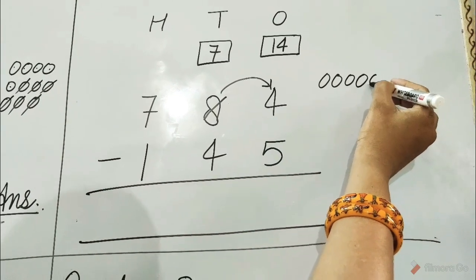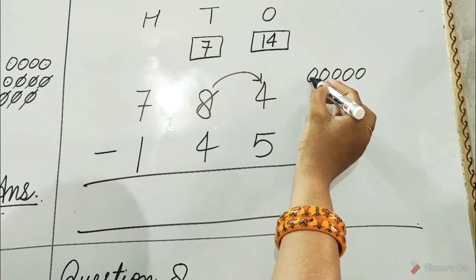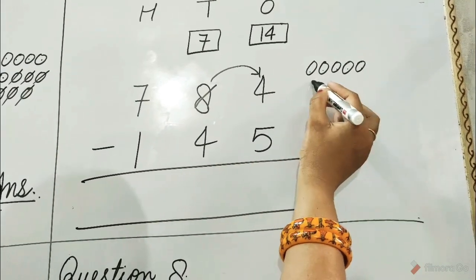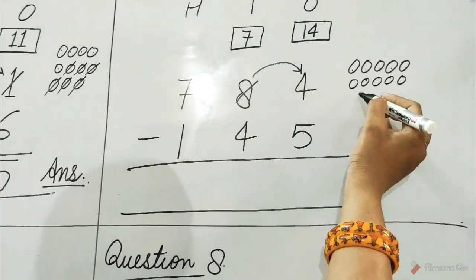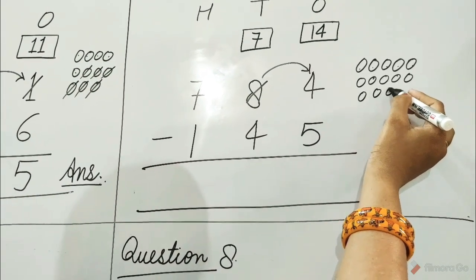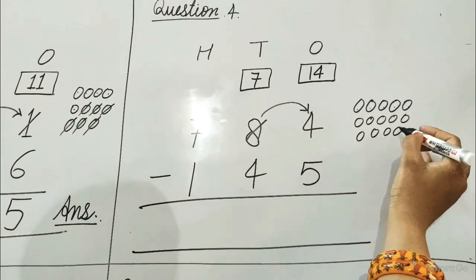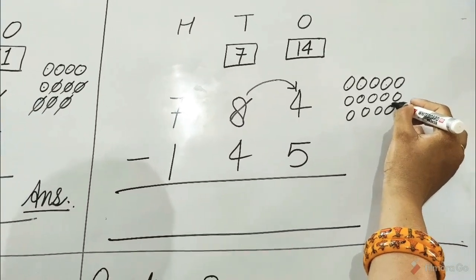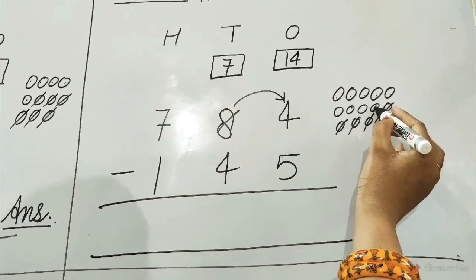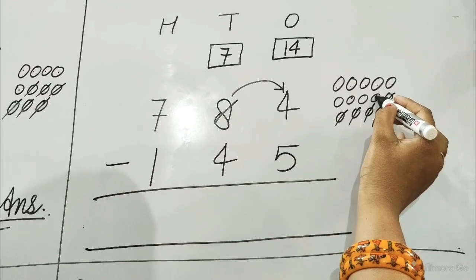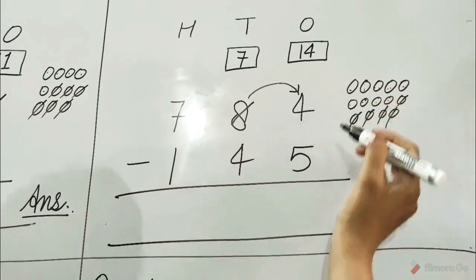Subtract the ones column. Draw 14 circles: 1 through 14. And cut 5 circles from the 14 circles: 1, 2, 3, 4, 5. Count all the remaining circles: 1, 2, 3, 4, 5, 6, 7, 8, 9.